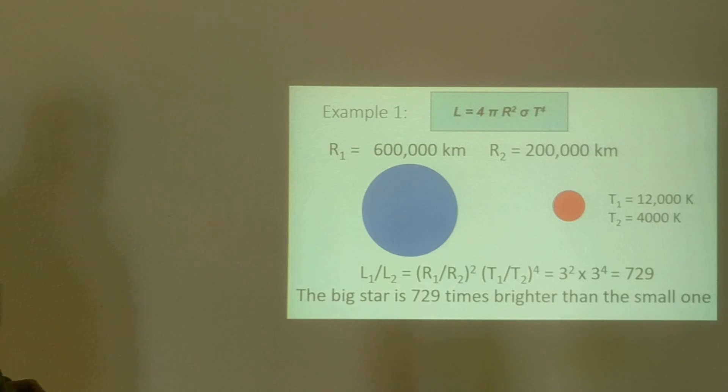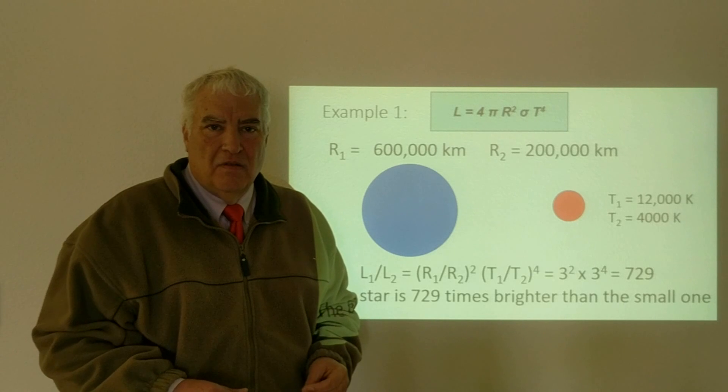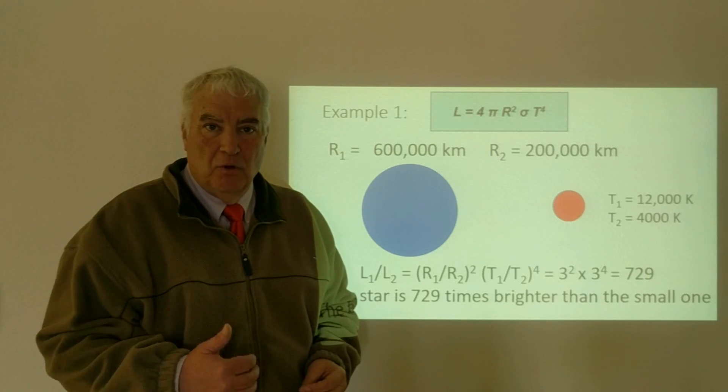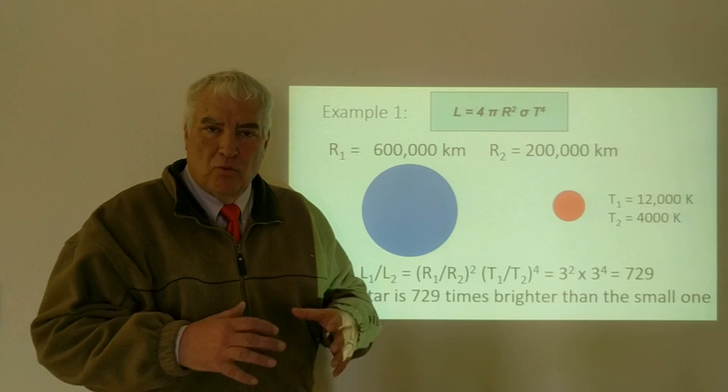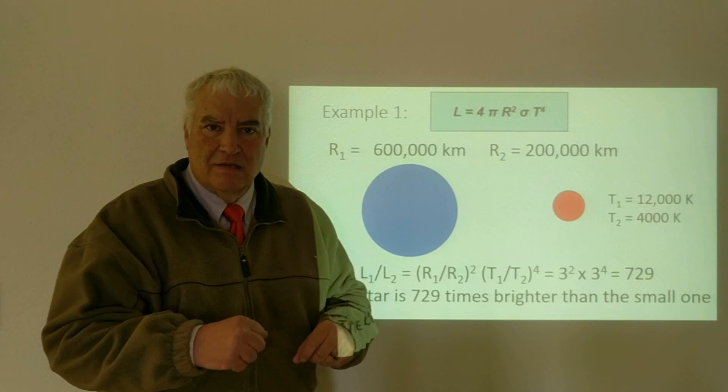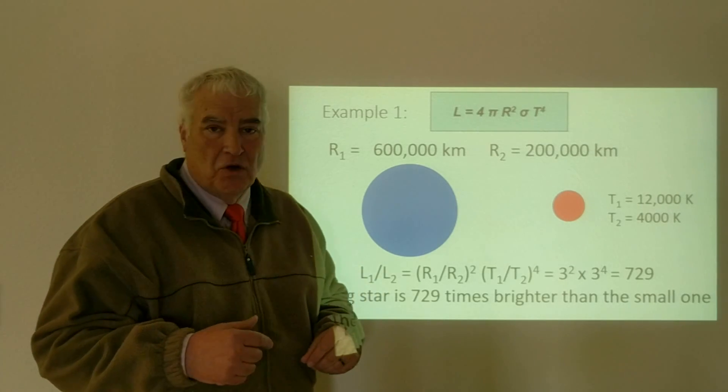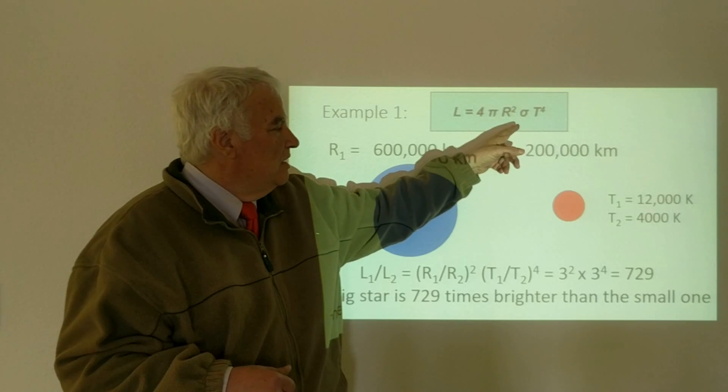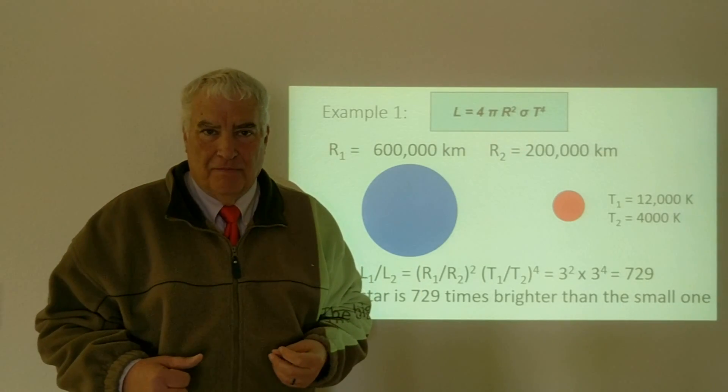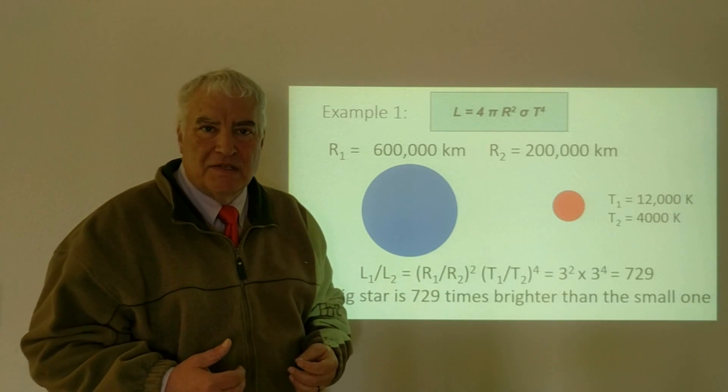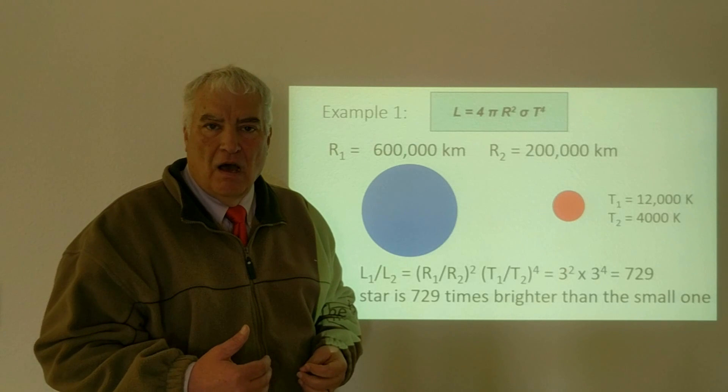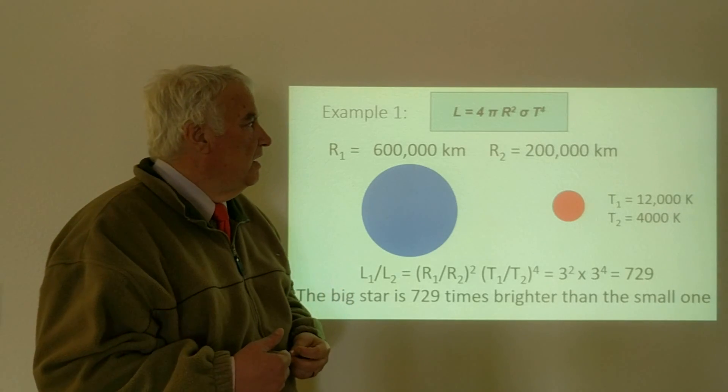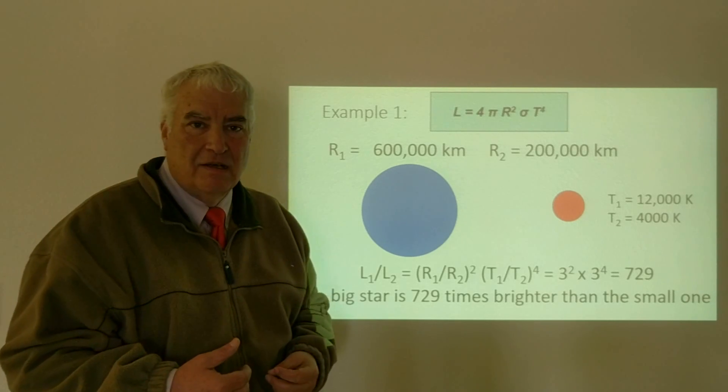So this gives us the Stefan-Boltzmann law, which is a way that we can connect the concepts of luminosity—the total energy emitted from the star—the radius of the star describing its size, and the temperature of the star, which are related by the luminosity is 4πr²σT⁴. Sigma is the Stefan-Boltzmann constant, but in the examples we've used here it wasn't needed because we were just considering the comparison of one star to another. So that is the summary of the sizes of stars and the connection to the luminosity and the temperature.